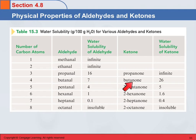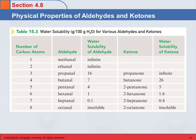With the ketones, again, the smallest one is infinitely soluble, and then solubility in water goes down as the number of carbons increases. That's because increasing the carbon chain is like adding alkane — it's nonpolar. You've got to balance the carbonyl group's ability to hydrogen bond with water against the alkane chain's inability to interact with water. As the chain gets bigger and bigger, that nonpolar character plays a more important role.